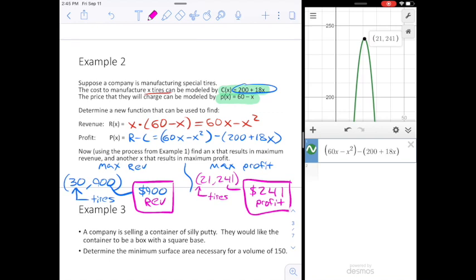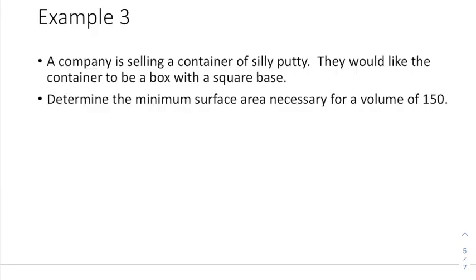So the ideal number of tires to sell if I'm interested in making the most profit possible would be 21 tires. If I just want the most money coming in possible, then I want to sell 30 tires. All right, for the remaining problems the focus is more so going to be on the setup than it is going to be the actual vertex process.